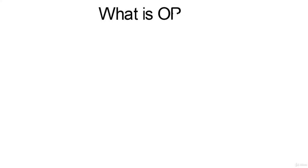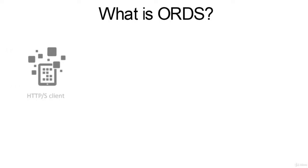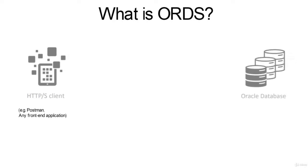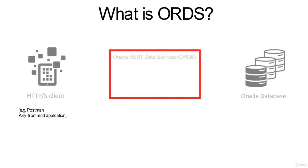Let's start with a question: what is ORDS? We'll start with an example of a client, which is an HTTPS client — it can be any application on a PC or mobile that supports HTTPS requests. In our case it's Postman, and we want to connect to an Oracle database. This happens through one more application in between, which is Oracle REST Data Services — that's ORDS.